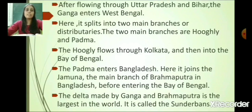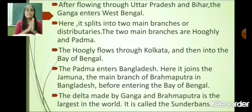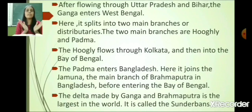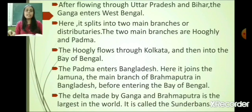After flowing through Uttar Pradesh and Bihar, the Ganga enters West Bengal. Here it splits into two main branches called distributaries: Hooghly and Padma. The Hooghly flows through Kolkata and then into the Bay of Bengal. The Padma enters Bangladesh, where it joins the Jamuna — the main branch of the Brahmaputra in Bangladesh.